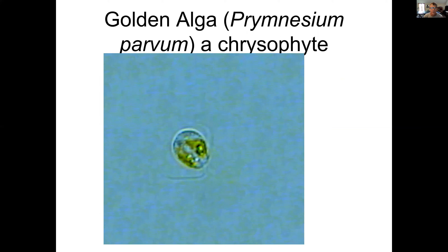In the golden algae, Prymnesium parvum is also a chrysophyte. It's not very distinct morphologically, but it's important because it can be quite toxic.